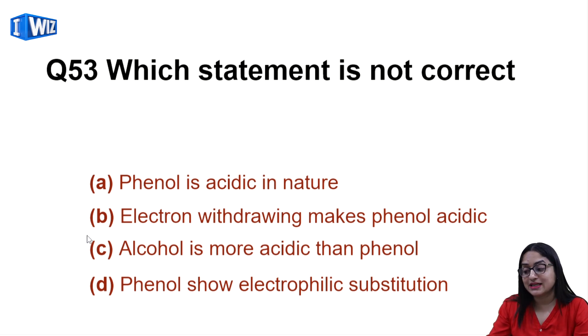Next is which statement is not correct. First is phenol is acidic in nature, second is electron withdrawing groups make phenol acidic, alcohol is more acidic than phenol, and phenol shows electrophilic substitution. So alcohol is more acidic - this is not correct because phenol is more acidic due to phenoxide ion being more resonance stabilized.